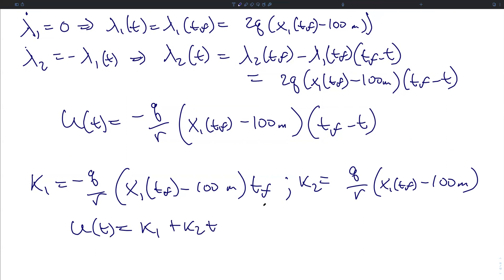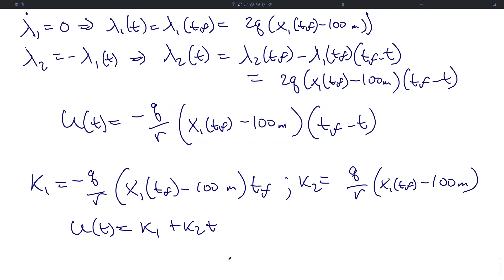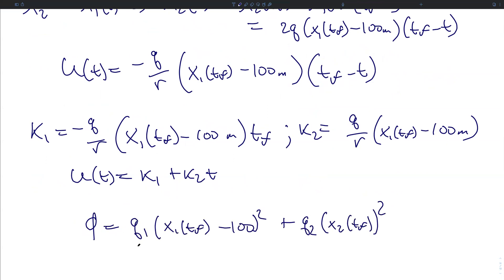We can also penalize the final velocity by redefining the final state cost as phi equal to Q1 times (x1 at tf minus 100 meters) squared plus Q2 times the square of the final velocity — driving the final velocity to as close to zero as possible is equivalent to driving this expression to zero. This is, of course, an incredibly simplified example, but it illustrates the basic application of Hamilton's equations. In general, you will not be able to analytically find solutions because the dynamics will be nonlinear and much more complicated, so numerical techniques will be needed to evaluate optimal control solutions, but the basic setup for the conditions for optimality will be effectively the same.